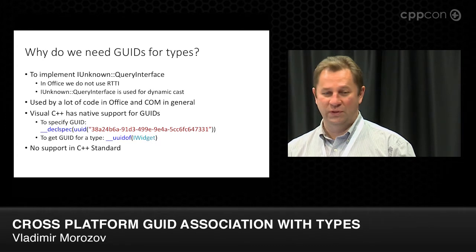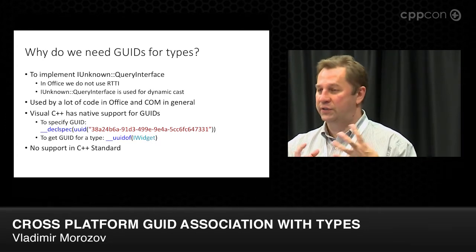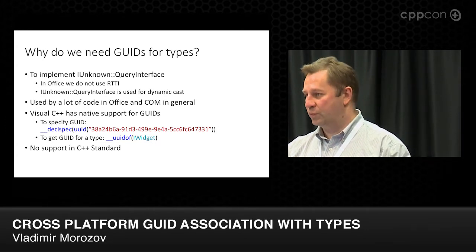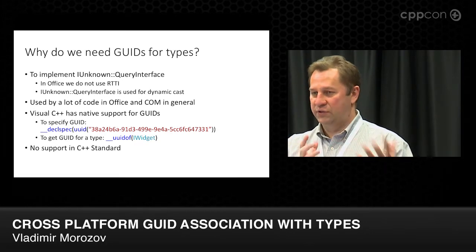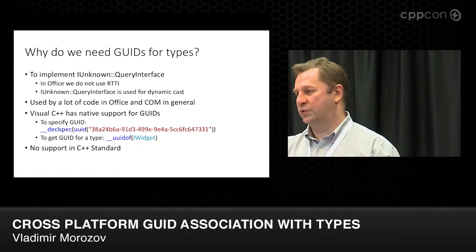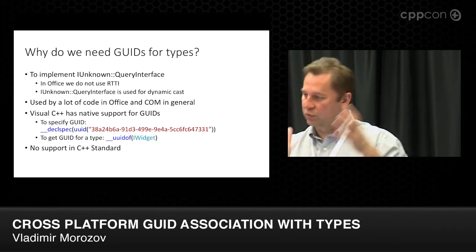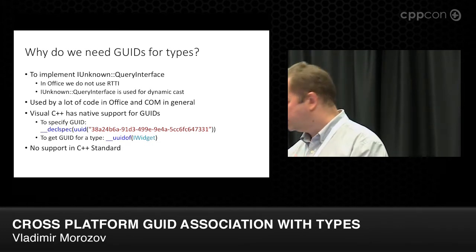When our team decided we want to share the same code base across multiple platforms — we want to have the majority of our shared Office code work on Android and on iOS — the question was: how do we do GUIDs?